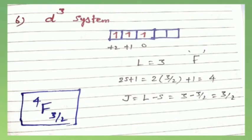For a d³ system, L=3 giving term letter F. With 3 electrons, S=3/2, so 2S+1=4. The sub-shell is less than half-filled, so J = L−S = 3−3/2 = 3/2. The term symbol is ⁴F₃/₂.